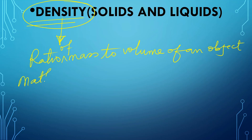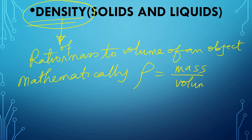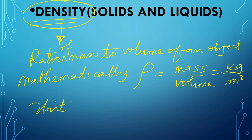Mathematically, density is represented as rho and is equal to mass over volume. The mass is measured in kilograms while the volume is measured in meters cubed, so that the unit of density is kilogram per meter cubed. Density is a scalar quantity because it has only magnitude but no direction.